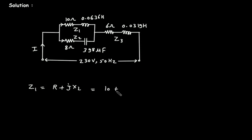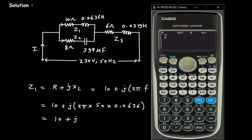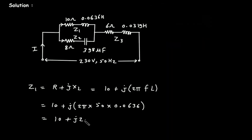For Z1, R is 10 ohm, so Z1 = 10 + j·XL. The formula for XL is 2πFL, so XL = 2π × 50 × 0.0636, which gives approximately 20. Therefore Z1 = 10 + j20.